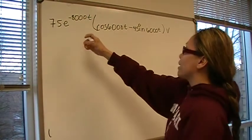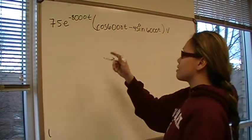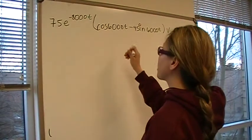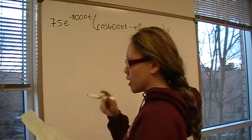By looking at the general equation for voltage, we can see that this is the general equation for the natural response of an underdamped, parallel connected circuit.